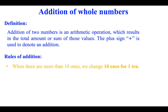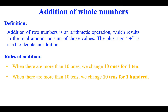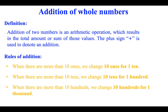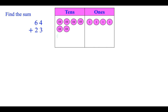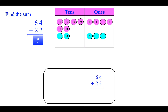Rules of addition: when there are more than ten ones, we change ten ones for one ten. When there are more than ten tens, we change ten tens for one hundred. When there are more than ten hundreds, we change ten hundreds for one thousand. Find the sum: sixty-four plus twenty-three. First, add the ones.